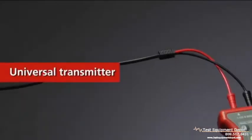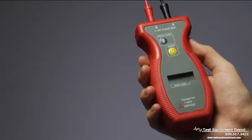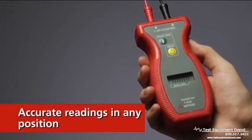A universal transmitter automatically switches to work with energized or non-energized systems, and the receiver can provide accurate readings in any position.